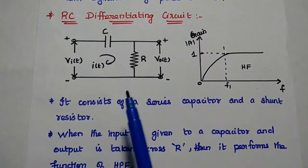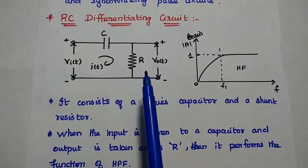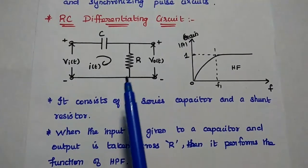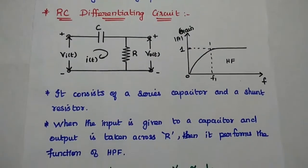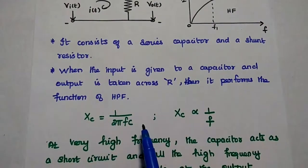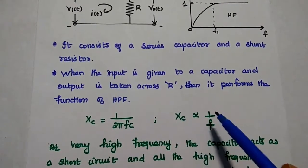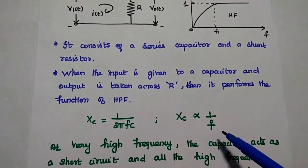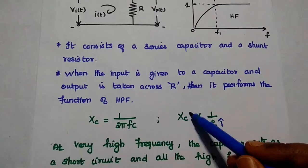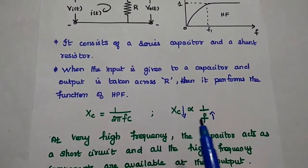The RC differentiating circuit consists of a series capacitor and a shunt resistor. This circuit can perform the function of a high pass filter. The capacitive reactance X is equal to 1 by 2 pi FC. From this, the capacitive reactance is always inversely proportional to frequency. If frequency increases, the capacitive reactance decreases. At high frequency range, the capacitance value is very low.